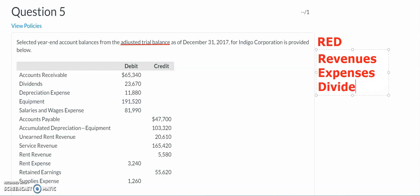We also have dividends. In our retained earnings statement, we report beginning retained earnings plus net income — which is essentially revenues and expenses — and dividends, to get to ending retained earnings. Since the retained earnings statement is prepared for a period of time, we need to close out our dividends account to start the next period with a zero dollar balance. The best approach is to identify which accounts are your red accounts so you know what needs to be closed.